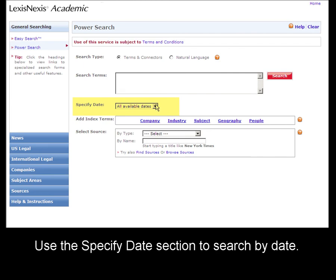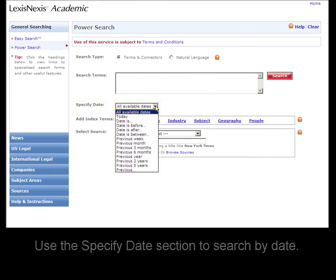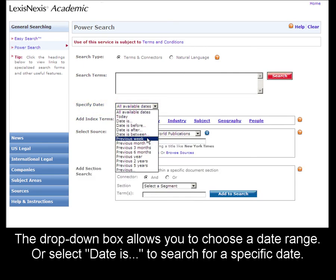Most search forms will include a Specify Date section. On the Specify Date drop-down box, you can use a range of time, like the previous three months or the previous year.